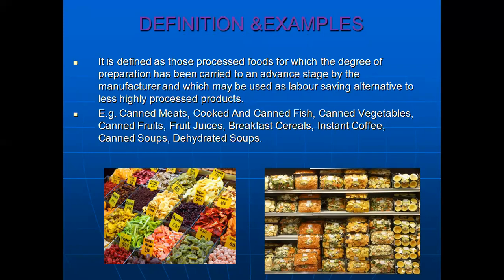It has been defined as those processed foods for which the degree of preparation has been carried out to an advanced stage by the manufacturer and which may be used as a labor-saving alternative to less highly processed products. Some examples are canned meat, cooked and canned fish, canned vegetables, canned fruits, fruit juices, breakfast cereal, instant coffee, canned soups, and dehydrated soups. As you can see, there are dried fruits and pre-packed vegetables in the photographs.